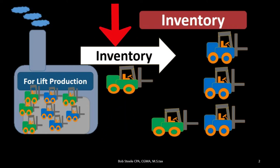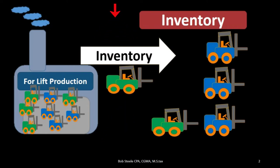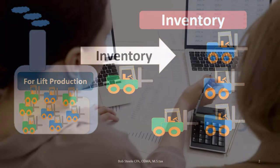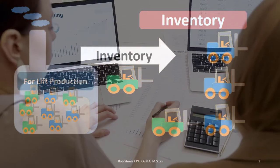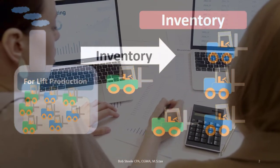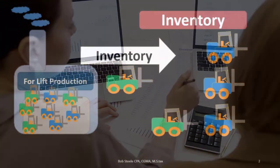So it's the intended use of the forklift which will determine whether it will be an asset in the form of inventory or an asset in the form of property, plant, and equipment.